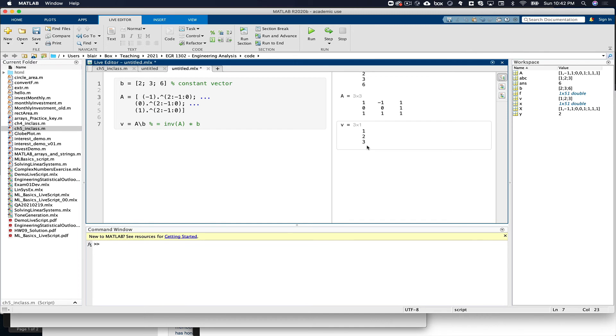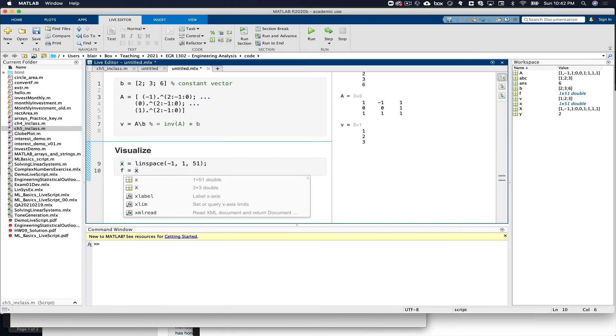Now, we could visualize it just to check. And we'll say, we'll let x go from negative 1 to 1. So here's our f of x. Notice it's A times x squared, B times x, and C times x to the 0. And then we'll plot it.